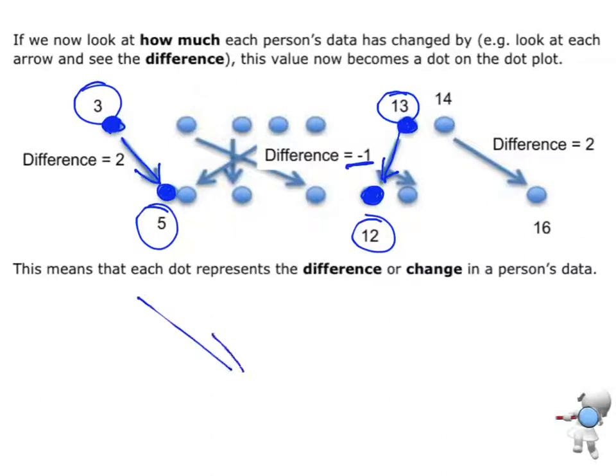So arrows going in that direction will give you a positive value. Arrows going in that direction will give you a negative value. So we're looking at that difference. How much has it changed by?